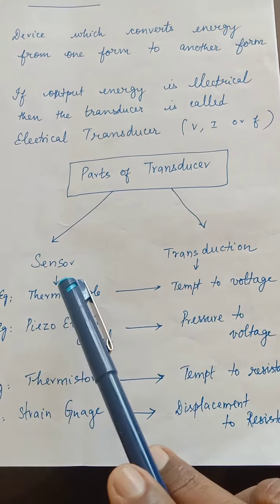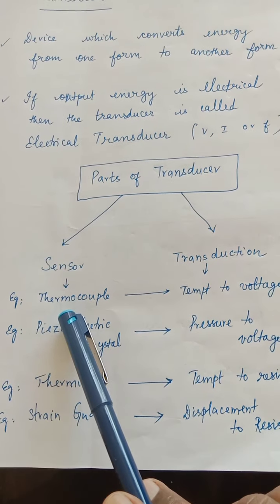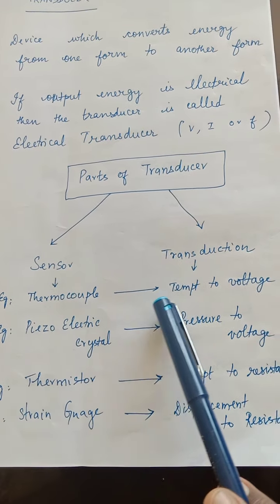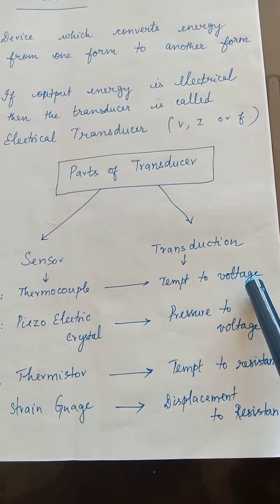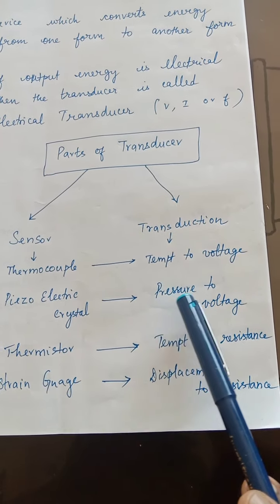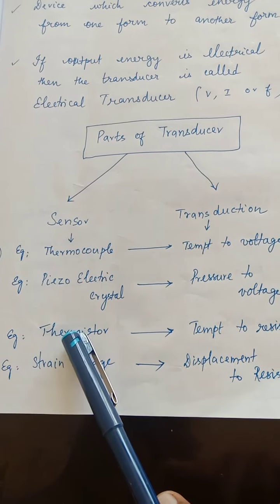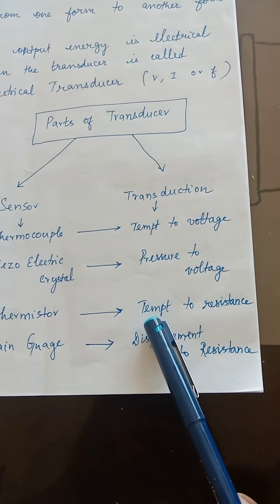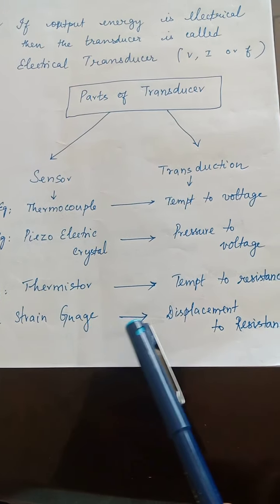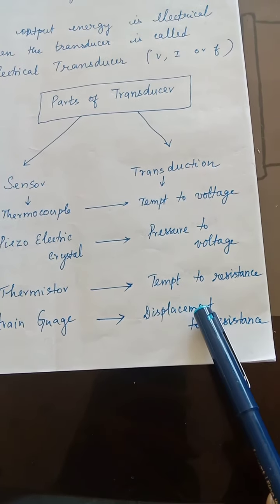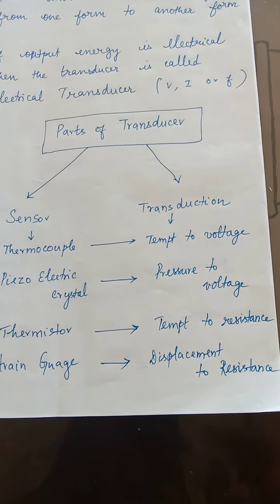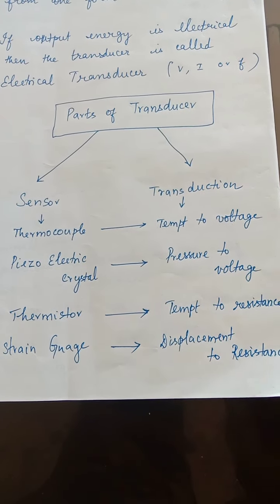If you look at the thermocouple, you can use the temperature and voltage. If you look at a piezoelectric crystal, you can use the pressure and voltage. If you look at the thermistor, you can use the temperature and resistance. If you look at the strain gauge, you can use the displacement. These are examples of transducers.